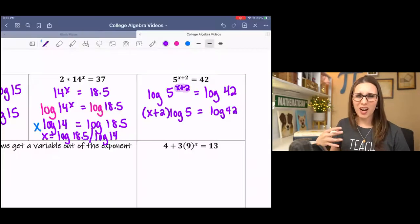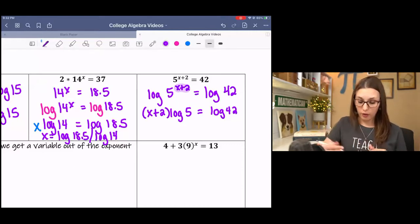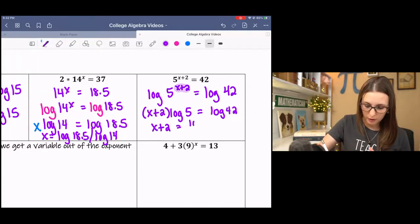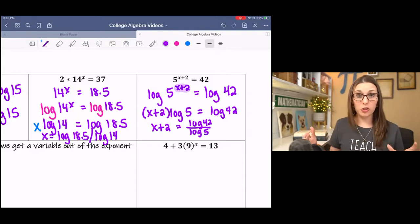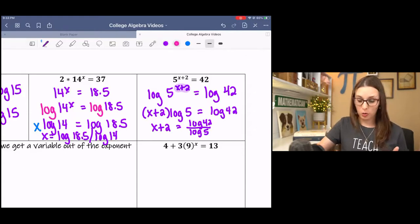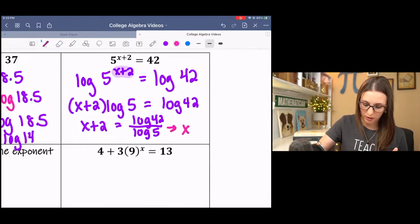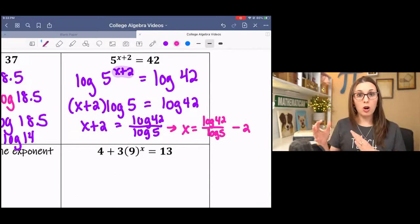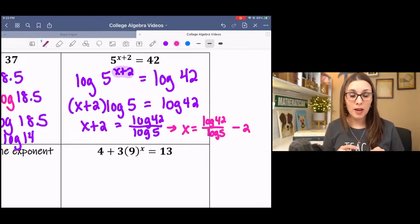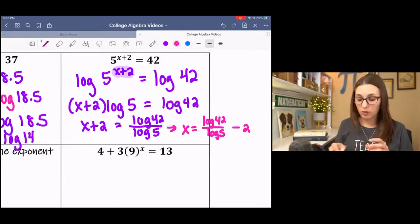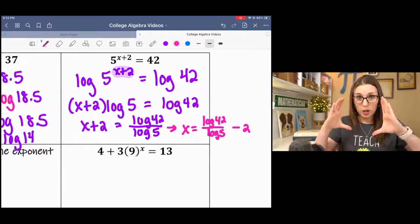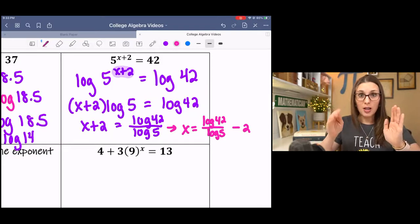Then I'm wanting to isolate x, but it's inside this parentheses. And it's being multiplied by log 5. So if I divide by log 5, then that isolates the x plus 2. And the last step would be to subtract 2 from both sides. And what we end up with is x equals log 42 over log 5 minus 2 on the outside. So be careful when you're typing that in. You want to make sure that you tell the calculator that you want to do log 42 divided by log 5 first, and then subtract 2.